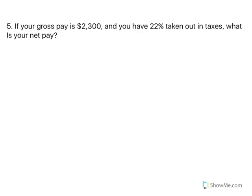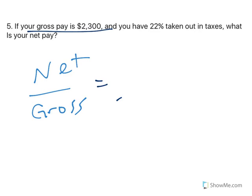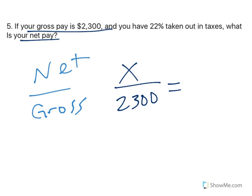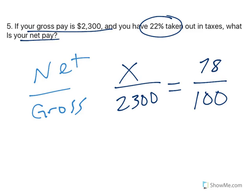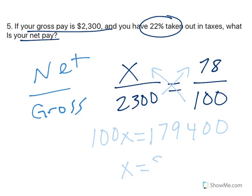Number five: if your gross pay is $2,300 and you have 22% taken out in taxes, what is your net pay? We've got net pay and gross pay, and gross pay is $2,300. We're trying to find our net pay. 22% is taken out in taxes, so you gross all of it and the net is 78% — 100 minus 22 is 78. We cross multiply: 100X equals 179,400. Divide both sides by 100 and we netted $1,794.